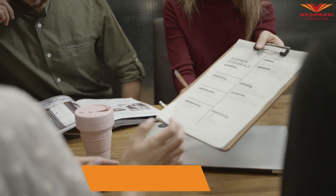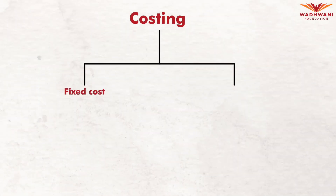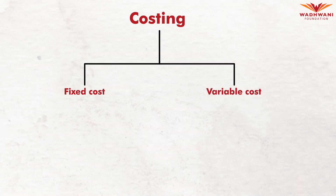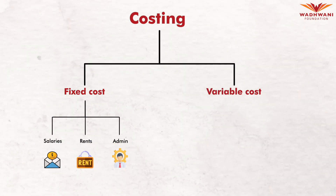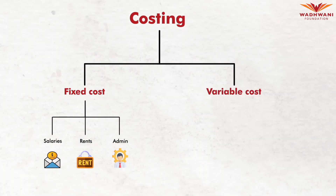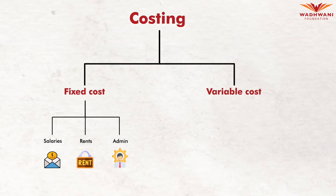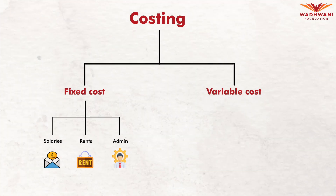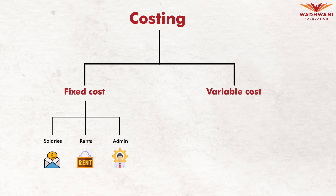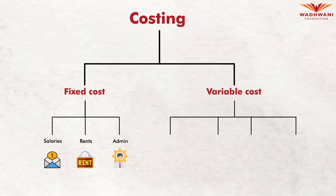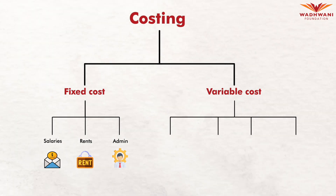Costing also involves fixed costs and variable costs. Fixed costs are things like salaries, rent, and admin, which don't change month to month — unless you have consultants working for you and paying them based on their performance. Variable costs change depending on your sales.